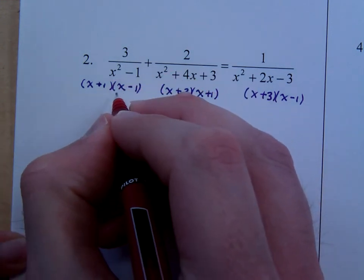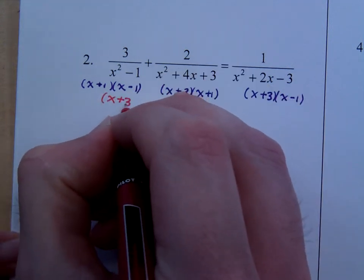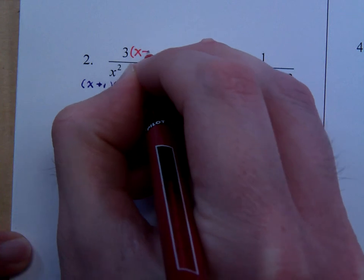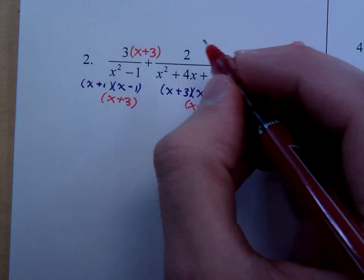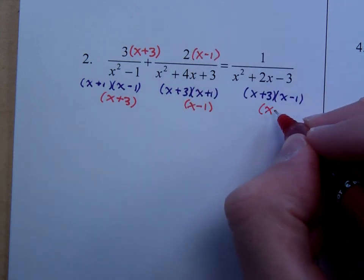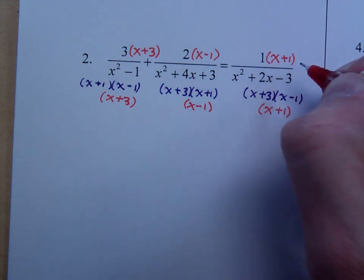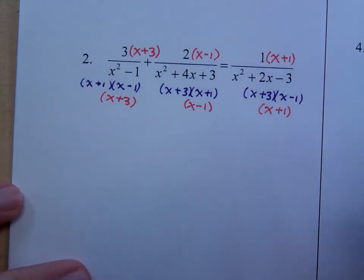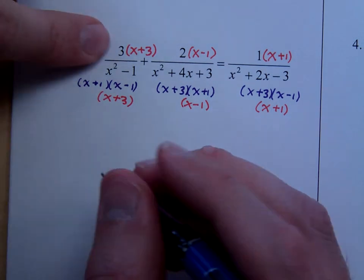This guy is missing the x plus 3 that everybody else has, so put that in the numerator and denominator. This guy is missing the factor of x minus 1. And this guy is missing the factor of x plus 1. Since everybody has the same denominator now, we just need to worry about those numerators. So distribute correctly here.